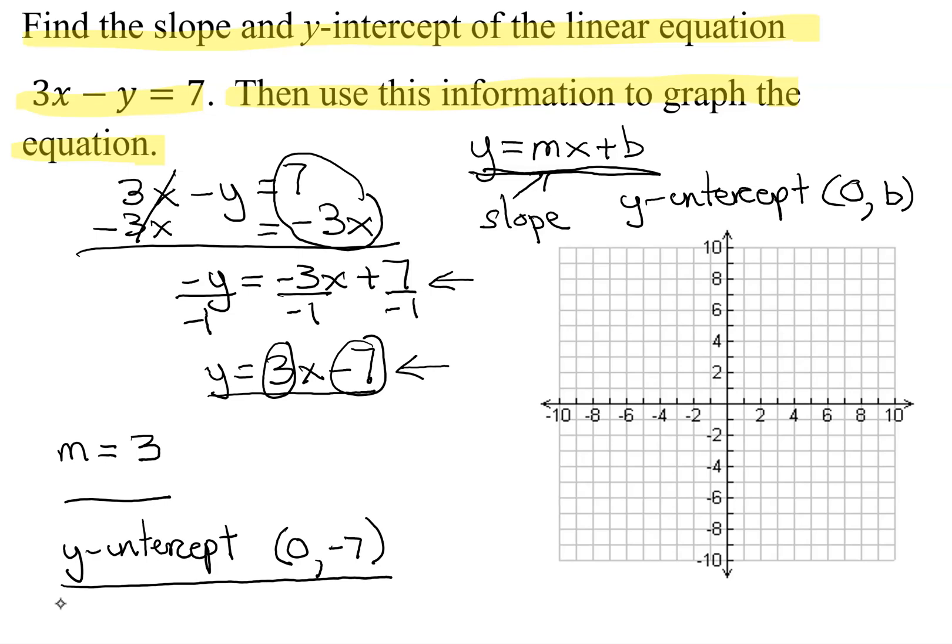So, now we're ready to graph it. And so, what we're going to do is we start with the y-intercept. So, remember, when you graph anything, you always start at the origin. And to plot the point 0, negative 7, you go nowhere in the x-direction, but you go 7 down to get to 0, negative 7, which is right there.